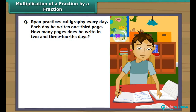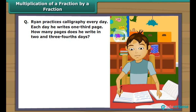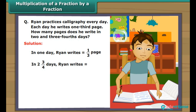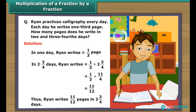Ryan practices calligraphy every day. Each day he writes one-third of a page. How many pages does he write in two and three-fourths days? The part written in one day is one-third, so in two and three-fourths days it is one-third multiplied by two and three-fourths. This equals one-third multiplied by eleven-fourths, which gives eleven-twelfths. Thus Ryan writes eleven-twelfths of a page in two and three-fourths days.